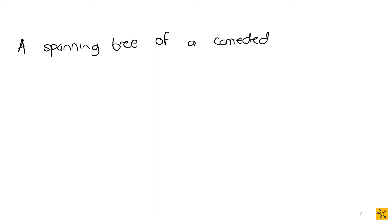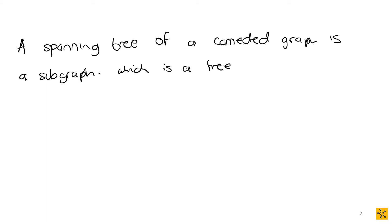A spanning tree of a connected graph — and it has to be a connected graph, because you can't have a spanning tree in a graph that is disconnected. Remember, the whole definition of a tree is that it is connected. A spanning tree is a subgraph which is a tree that includes all the vertices of the graph. It essentially combines the definition of spanning and the definition of a tree.